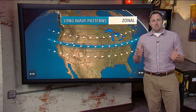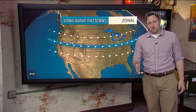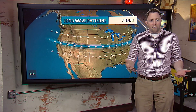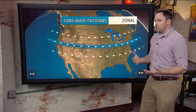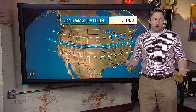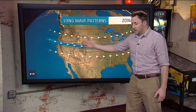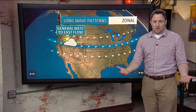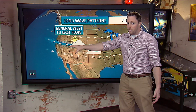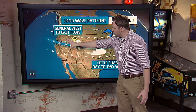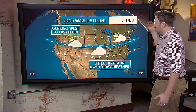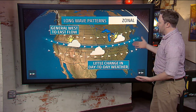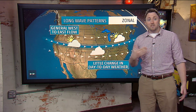First, we're going to start with the zonal pattern, which is a really technical way of saying the weather moves directly from the west to the east. So whenever you have a cloud or a thunderstorm or any of the weather, it all comes from the west coast and moves towards the east coast. The temperatures don't change much — the pattern really just stays the same day to day.